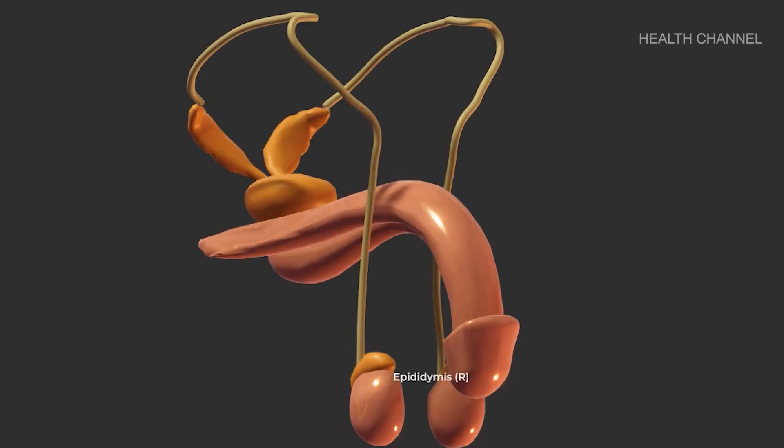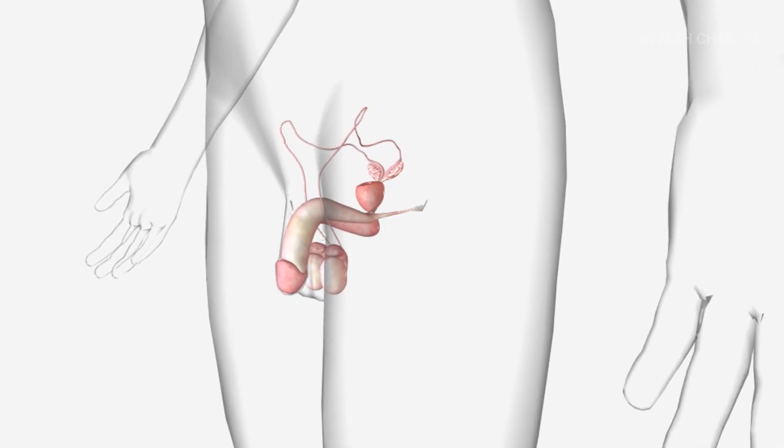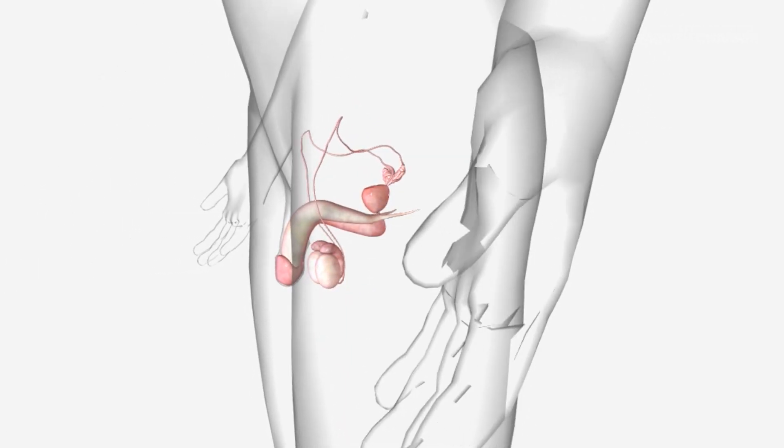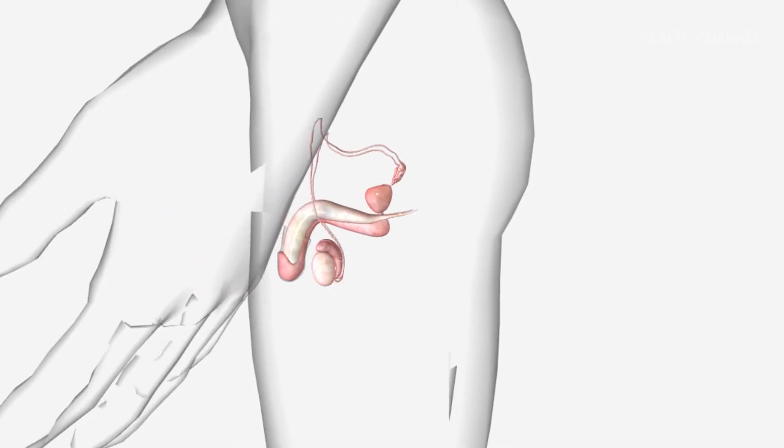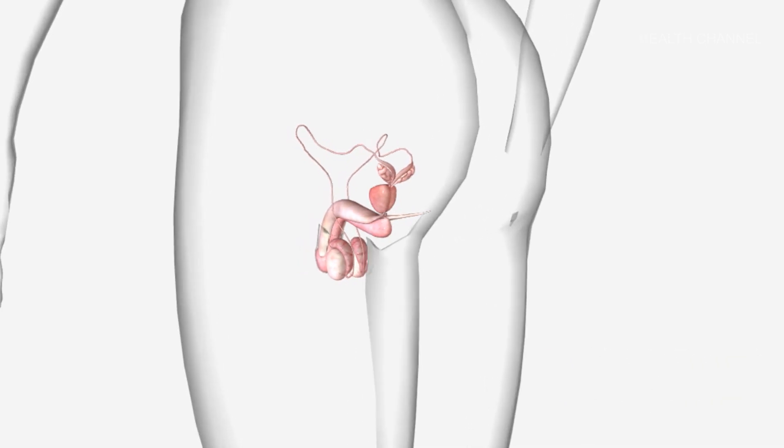The epididymis transports and stores sperm cells produced in the testes. It is also responsible for maturing sperm. Sperm that emerges from the testes is immature and incapable of fertilization. Contraction forces the sperm into the vas deferens during sexual arousal.